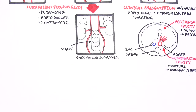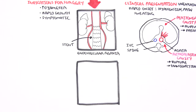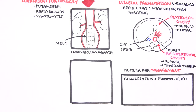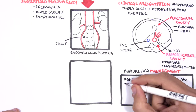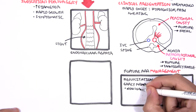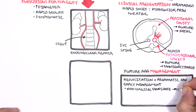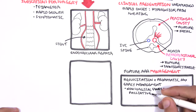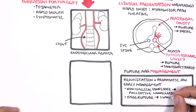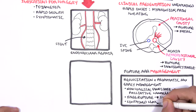The management of a ruptured AAA is an emergency, and in summary requires resuscitation and surgery. Prophylactic antibiotics prior to surgery are also important. Early management for non-surgical candidates is palliative care and analgesia. For a free rupture or a contained leak, surgery is indicated.